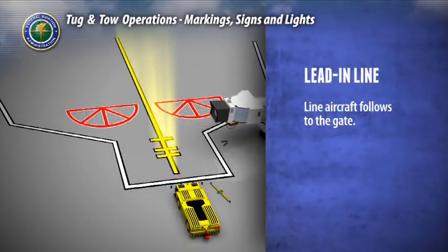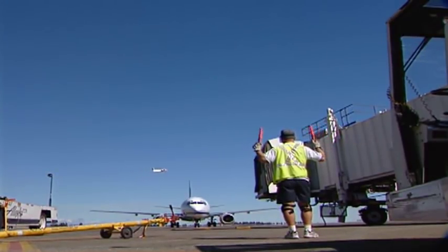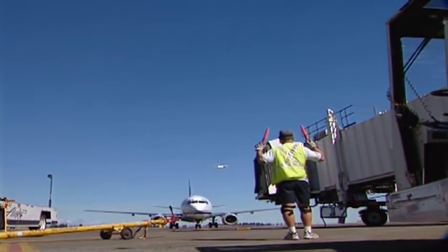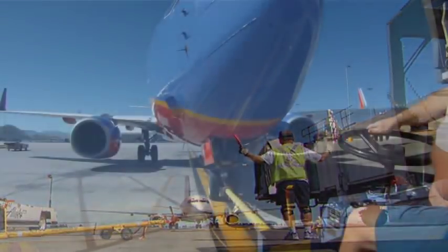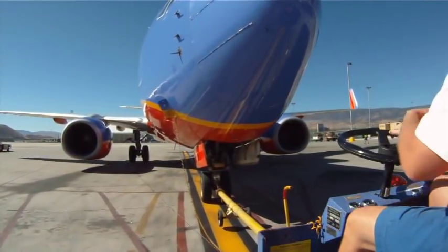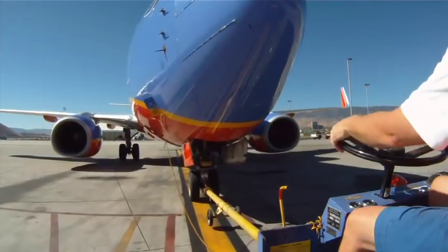The lead-in line is the line that the aircraft follows to the gate. This line is yellow with a black outline. The ground marshal will direct the aircraft so that its nose wheels straddle the center of this line. When towing an aircraft out of the ramp, the tug operator should also use this line as a general guide.